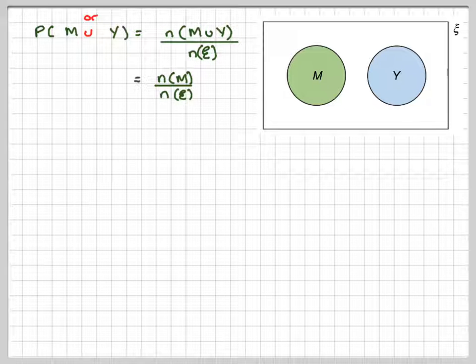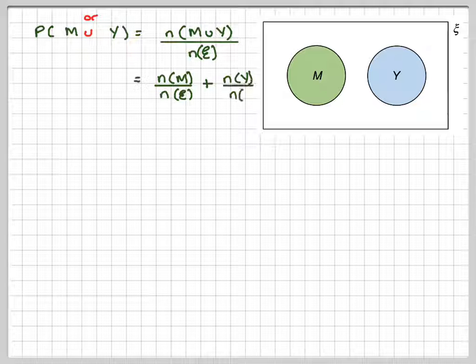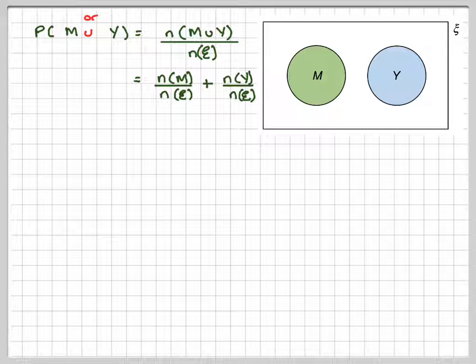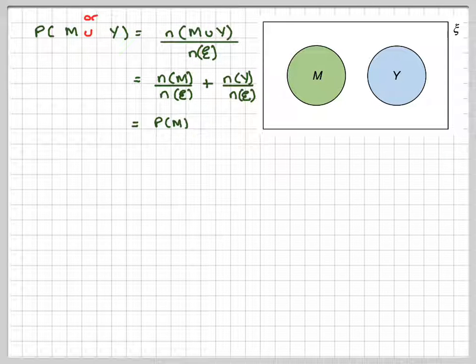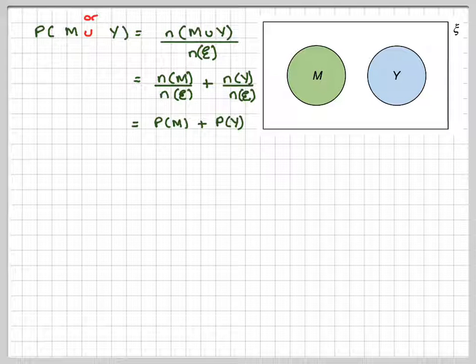So this is the number in M divided by the number of the universal set, plus the number in Y divided by the number in the universal set, which is the probability of M plus the probability of Y.